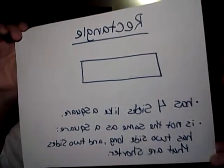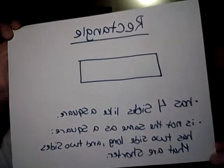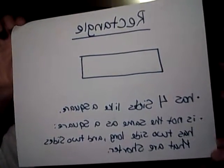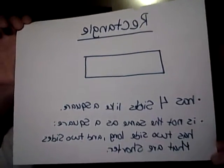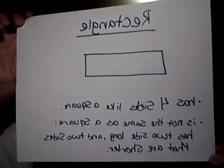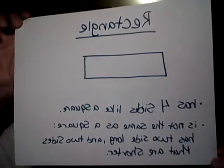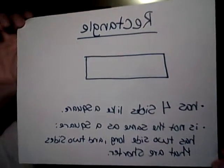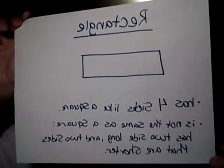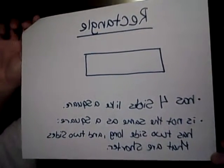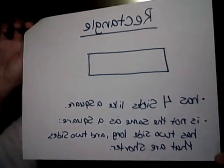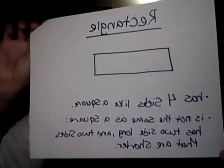You can see that the rectangle is kind of like a box, but it's a longer box. So under where you wrote rectangle, draw the rectangle that you see on the video. And if you need to pause the video, go ahead and trace it with your finger on the screen to help you be able to draw it on your paper.